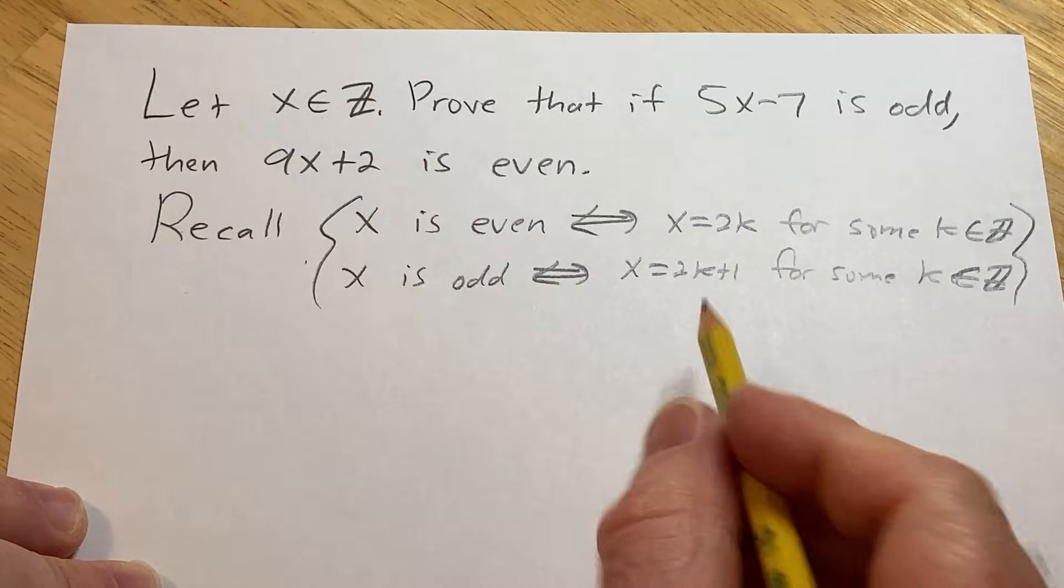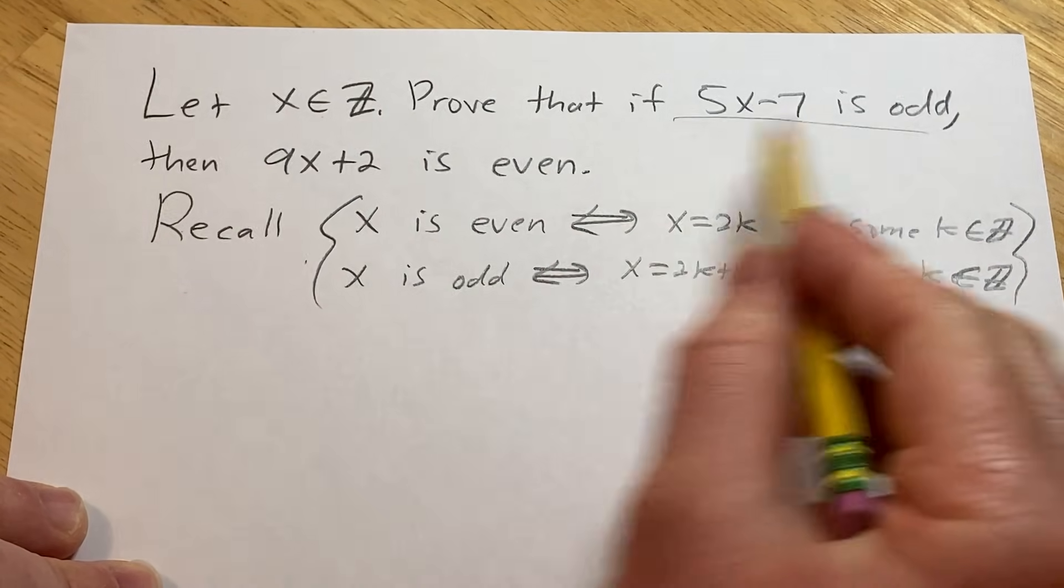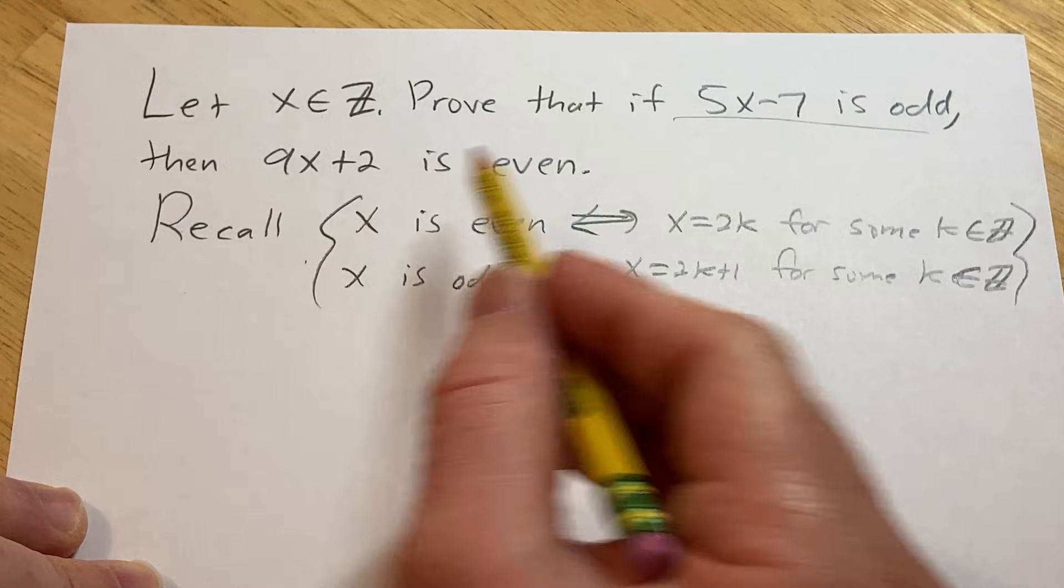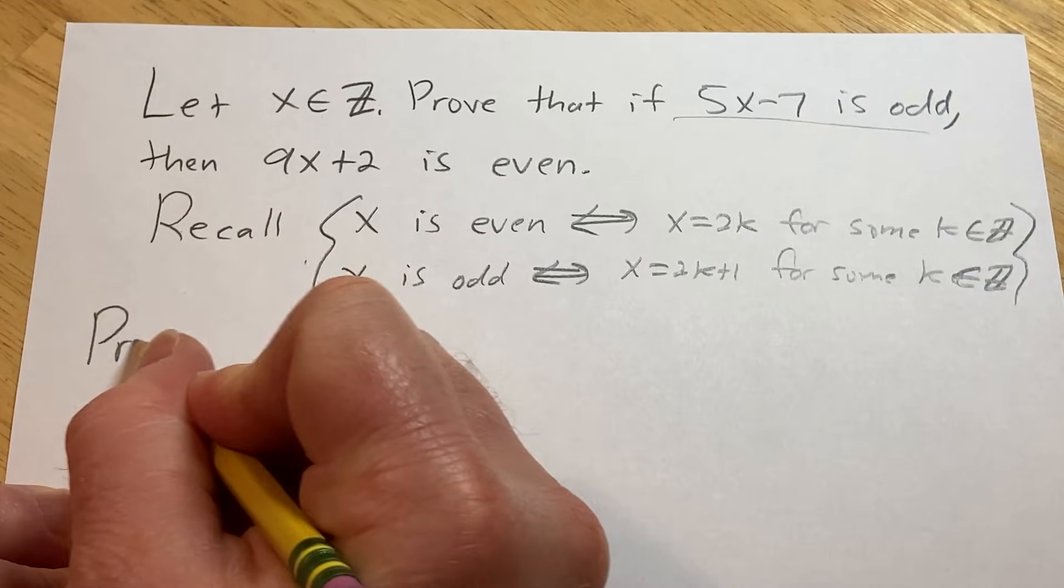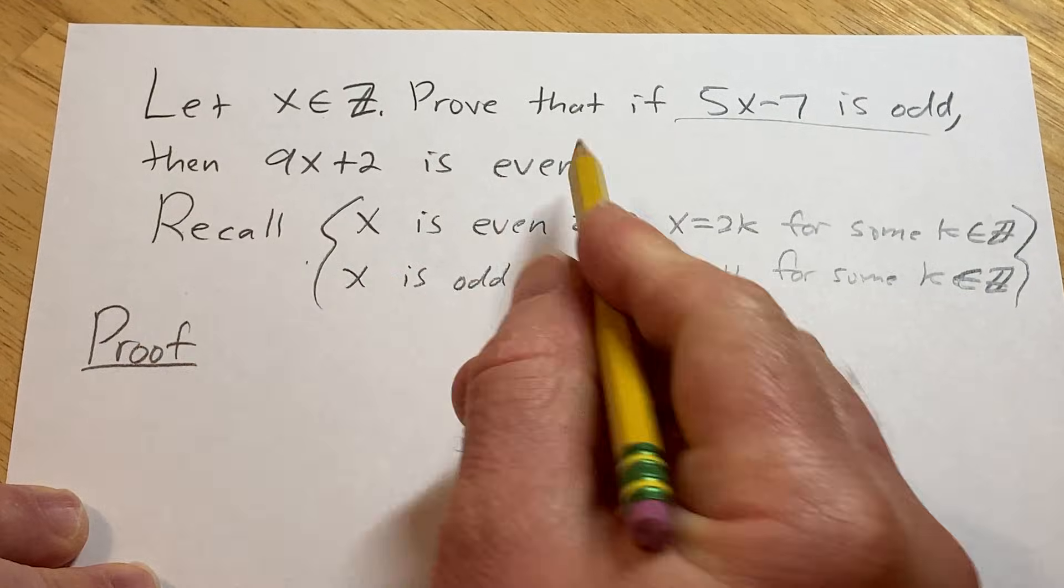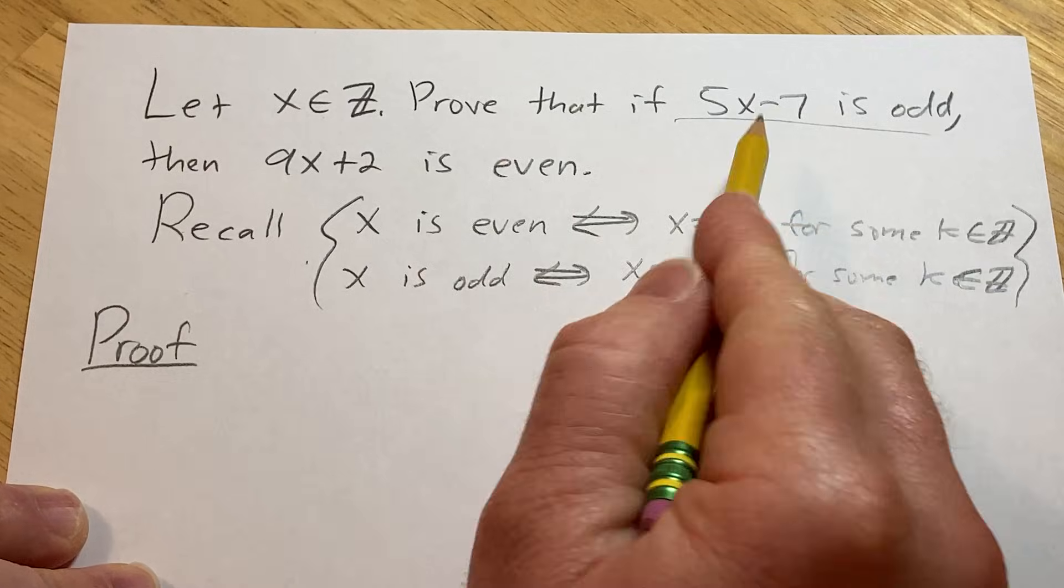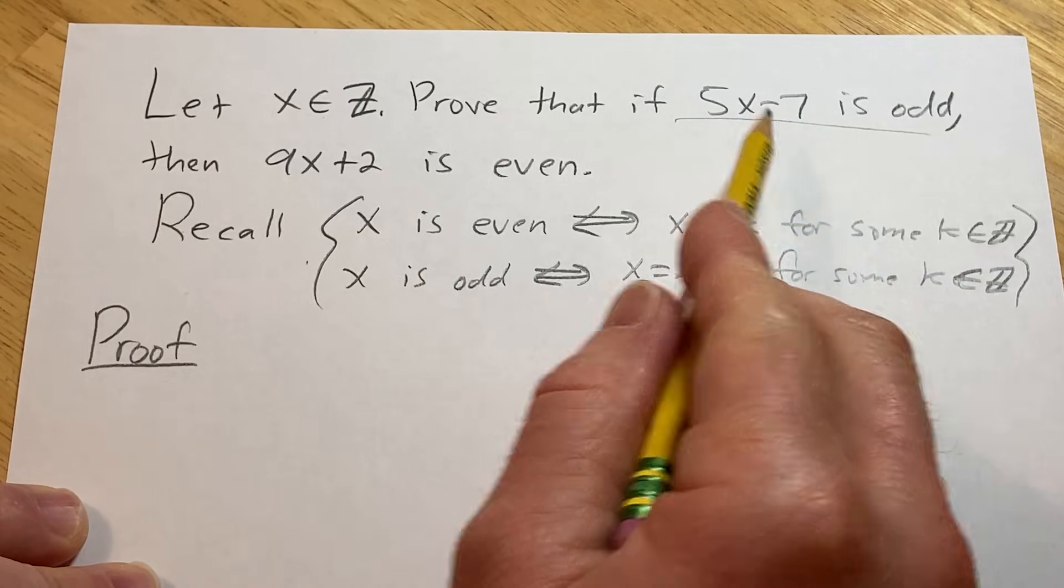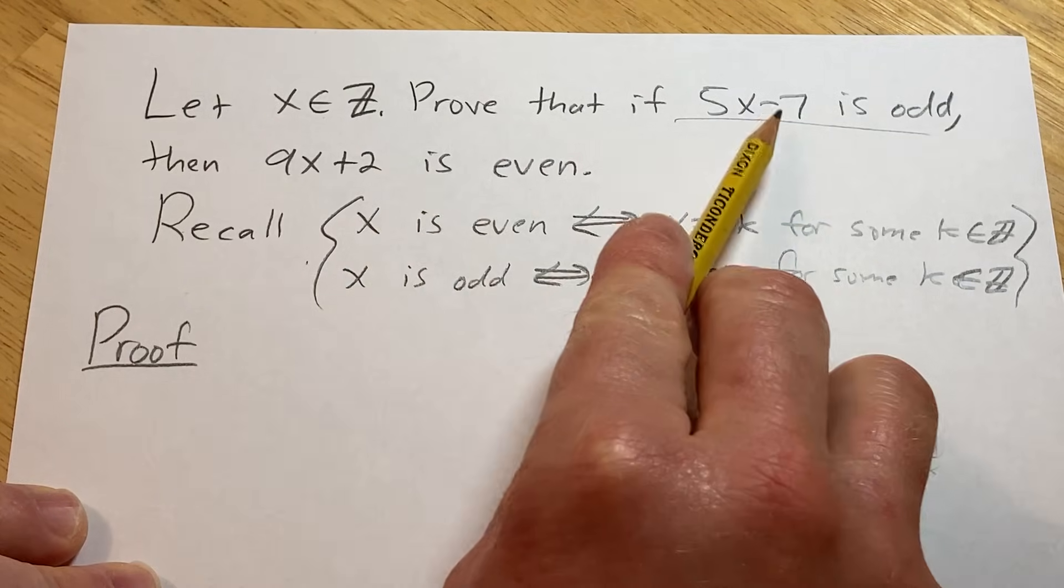All right, we're just going to give a direct proof. We're going to assume that this is odd and we're going to try to show that this is even. So proof. So this is an if-then proof. So basically you assume this is true and then you have to show this is true.